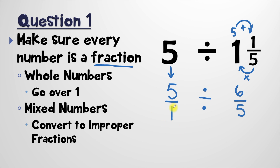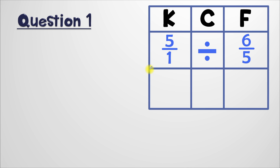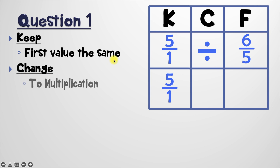So now I'm going to rewrite this, and then we're going to start the actual division process. Now that we've got it written here — five over one divided by six over five — we should make sure we make a KCF chart. KCF is the process you use whenever you're dividing fractions, and each of these letters means something really important. The letter K stands for keep. And what we're keeping is the first value that we have. It's going to stay exactly the same. So we started with five over one, and since that's in K, we're going to keep five over one. The C stands for change.